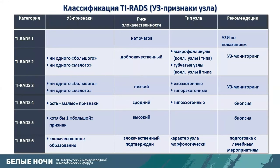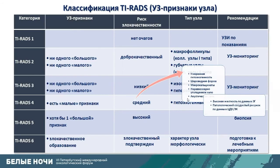A summary of TIRADS using ultrasound features: TIRADS 2 — no major or minor features, colloid nodes. TIRADS 3 — no major or minor features, isoechoic and hyperechoic. TIRADS 4 — minor features present, and all hypoechoic nodes fall here. TIRADS 5 — at least one major malignancy feature; high risk of malignancy. TIRADS 6 — confirmed malignant node; the patient is prepared for appropriate treatment.